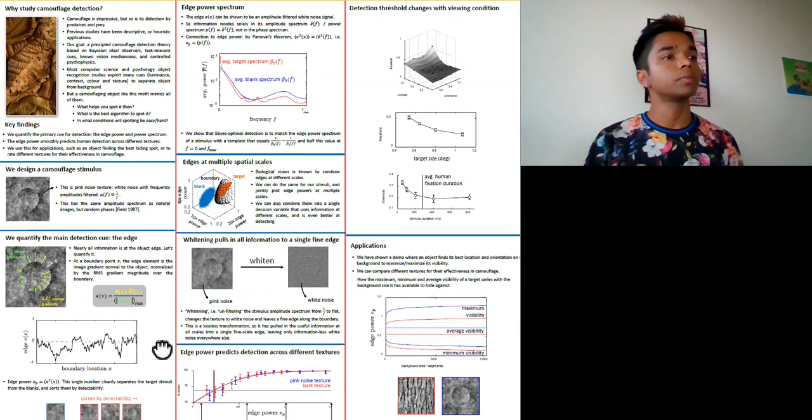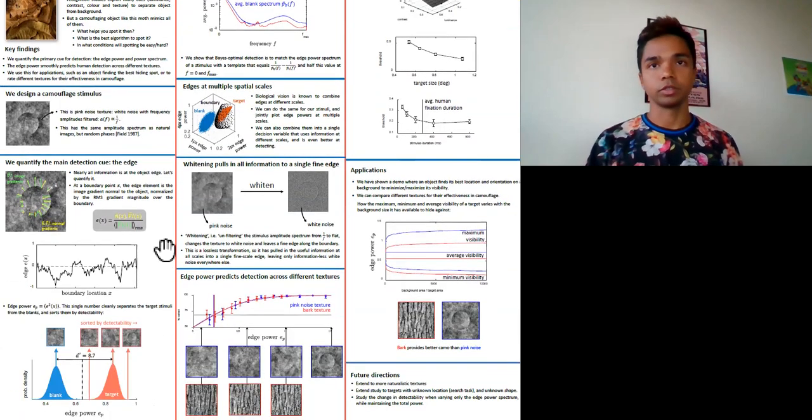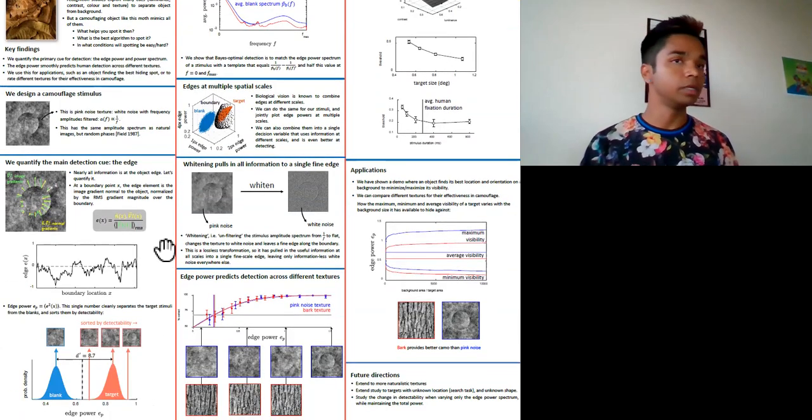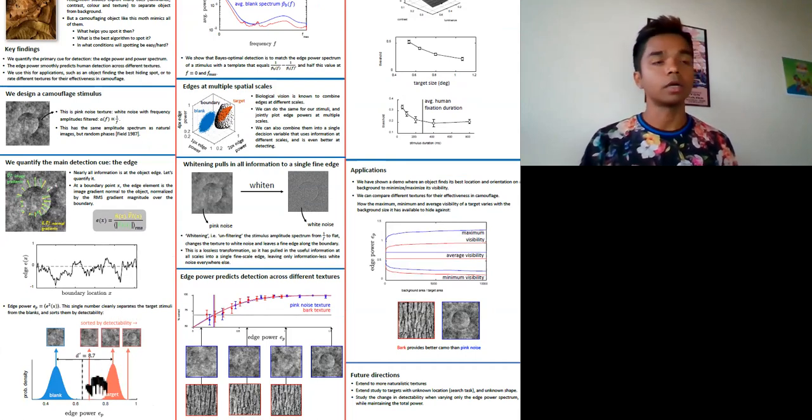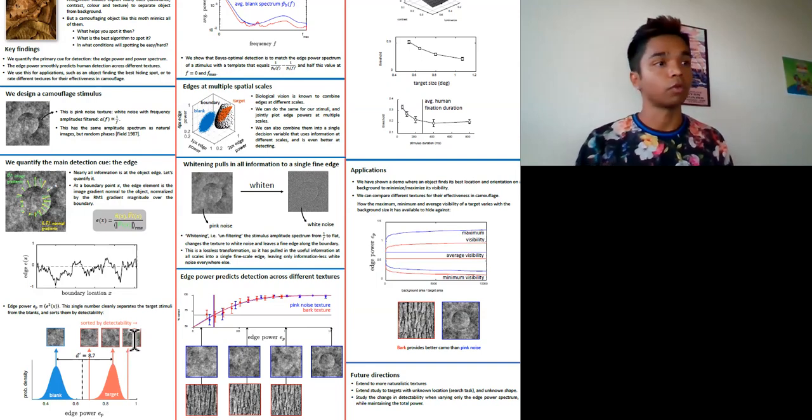We can measure the power of this edge vector signal, which is the sum, or in this case, the mean of the square of its elements. This edge power is larger when a target is present, and also larger the more visible that target gets. So this is a great decision variable for detection.